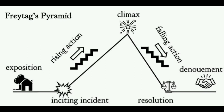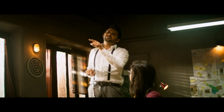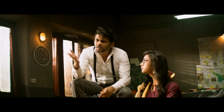Freytag's Pyramid explicates the dramatic structure of a plot. It consists of seven elements, although a writer can choose whether or not to include the seventh element. One should explain the Freytag's Pyramid through a literary work. Since I am not quite familiar with novels, I will be explaining this through a movie, which for the obvious reason contains a plot.